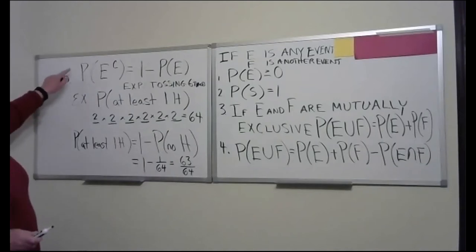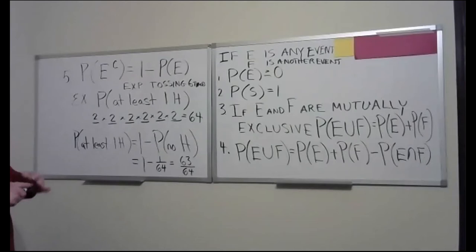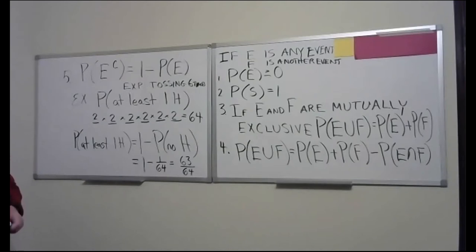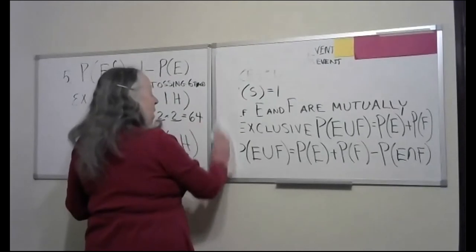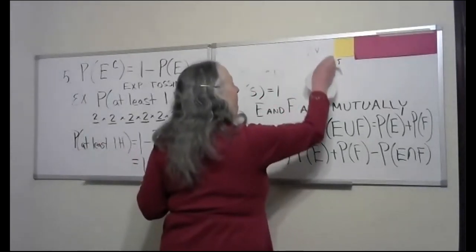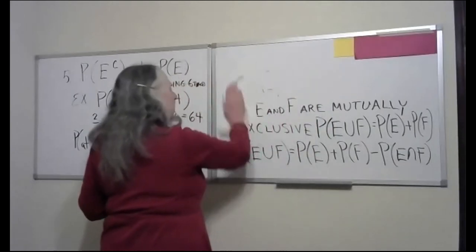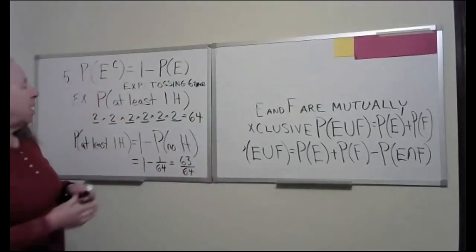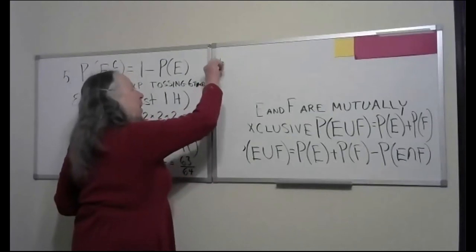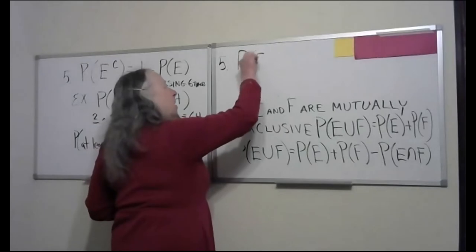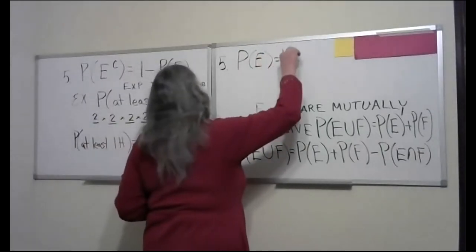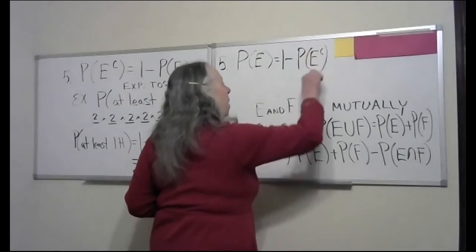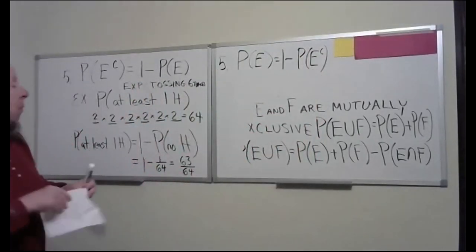We use this complement rule either in its present form or by switching sides. If I'm looking at a certain event and the probability of the complement is easier to find, I'll do that first. Statement five can be restated as: the probability of an event equals one minus the probability of its complement.